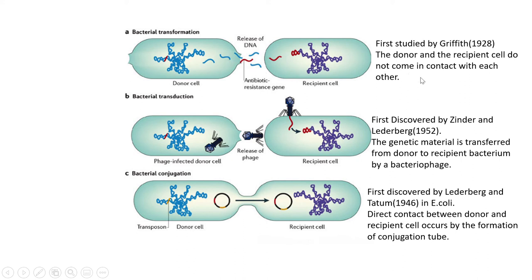The second type of genetic recombination in bacteria is bacterial transduction, first discovered by Zinder and Lederberg in 1952. In this process, the genetic material is transferred from the donor to the recipient bacterium by a bacteriophage. Here we see the bacteriophage attached to the bacterial cell and the process proceeds.